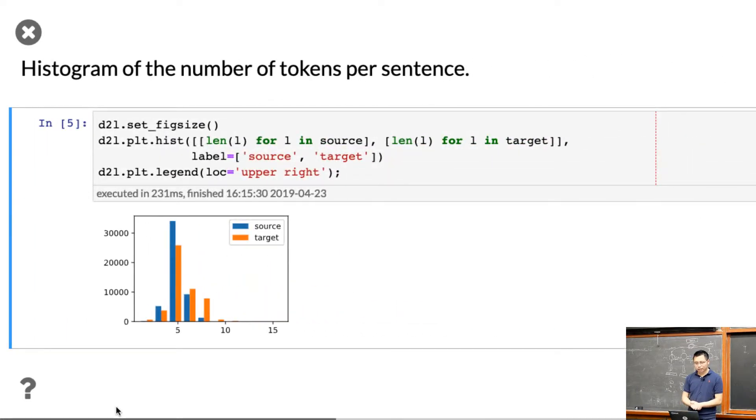We can see this is a histogram of the source language and target language. You can see this is a very short dataset. On average, everybody has five words, including all the specialized tokens, just five words. The source language and target language, it looks like the French is a little bit longer than the English. But in general, they're pretty easy.